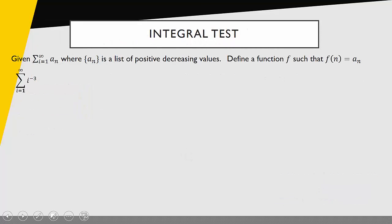So what is the integral test? It's a way we can determine whether a series converges or doesn't converge. We'll start by looking at a series. The criteria for our test is that the terms of the series are positive and decreasing values. If we have a series that meets that criteria, we'll define a function f such that f of n equals a sub n. Here we have the series i to the negative 3 power.